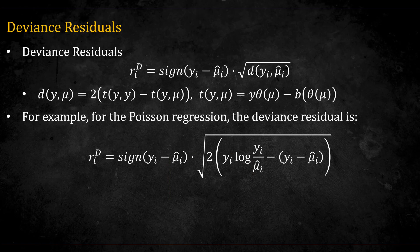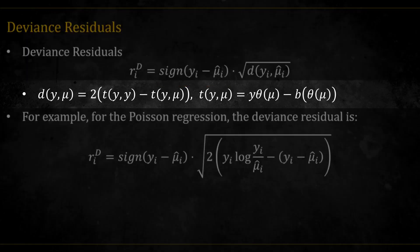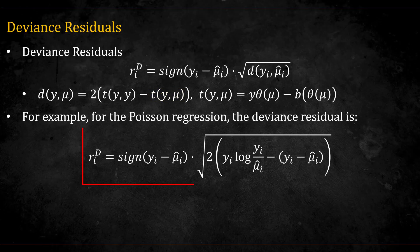The deviance residuals are defined as the square root of the unit deviance multiplied by this part here, which gives the residual a sign according to if the data is above or below the predicted mean. Remember that the unit deviance is a sort of statistical distance between the unconstrained model and the constrained model. It is equal to twice the difference in the log likelihood between a model where the mean is centered on the data point y to a model where the mean is constrained by the linear predictor model, and ignoring the scale function a. For the Poisson example, the deviance residuals is thus equal to this.